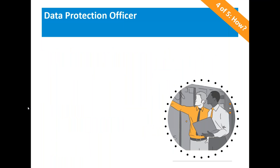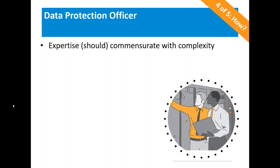Another big term: data protection officer, or DPO. The insertion of the data protection officer role in GDPR is super important. The need for DPOs is huge and concerning among experts right now — an estimated 28,000 DPOs will be needed to satisfy GDPR in year one. Organizations around the world are scrambling to satisfy that need. A DPO's expertise should be commensurate with the complexity of the organization — a very large organization with a lot of sensitive data requires a quite savvy DPO — but regardless, a DPO is necessary.